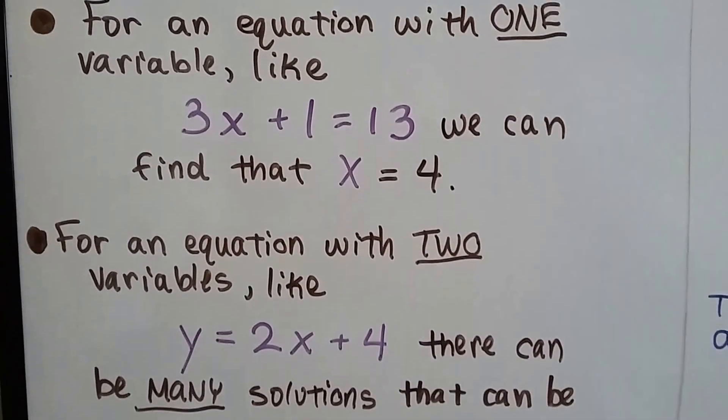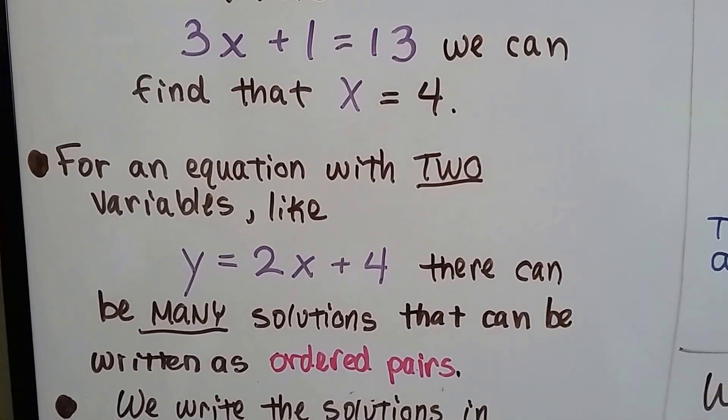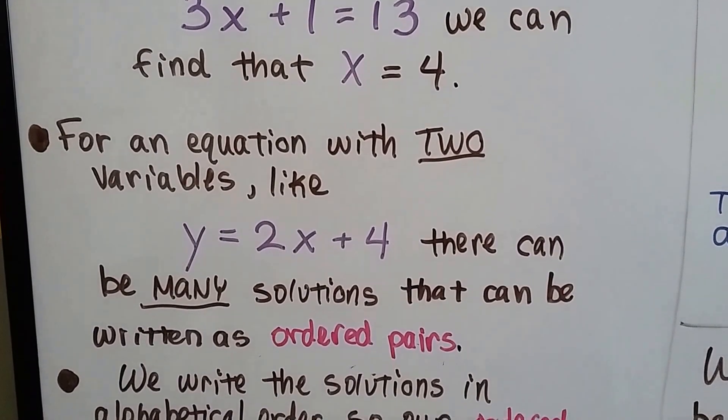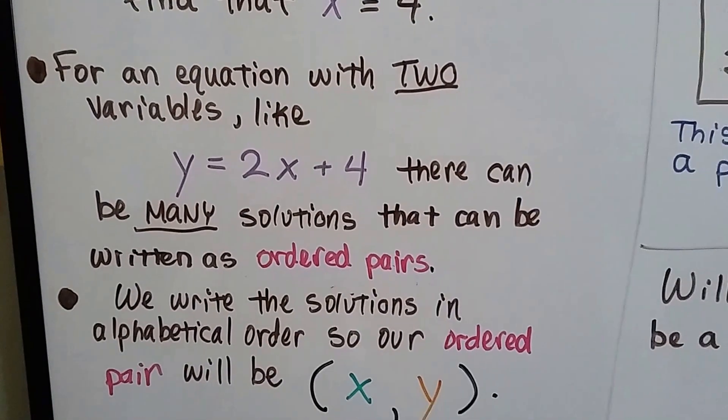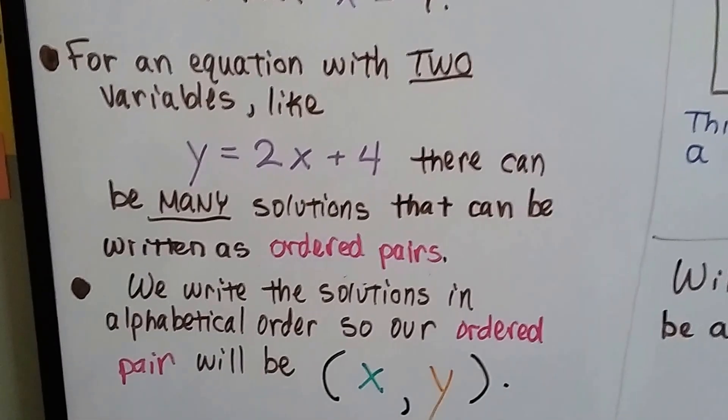For an equation with two variables like y equals 2x plus 4, there can be many solutions that can be written as ordered pairs. We write the solutions in alphabetical order, so our ordered pairs will be x and then y. x is always listed first.